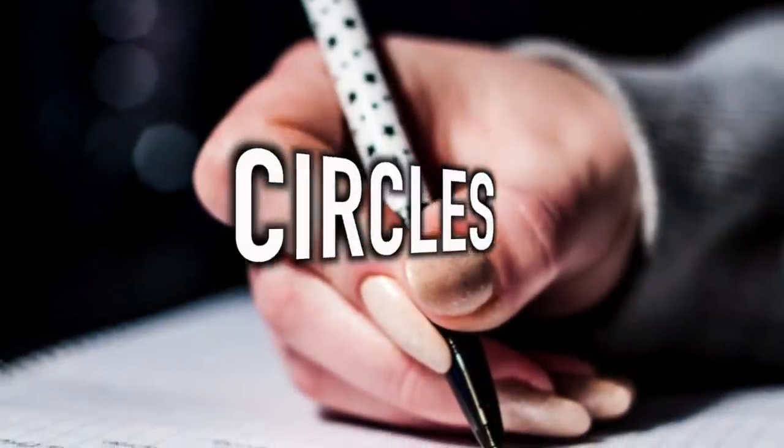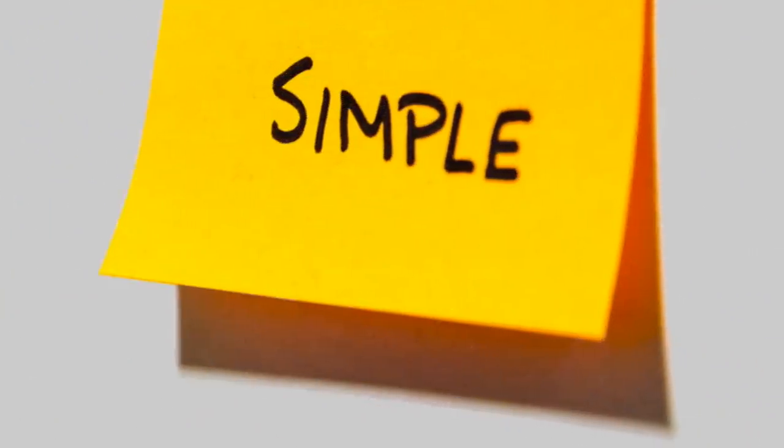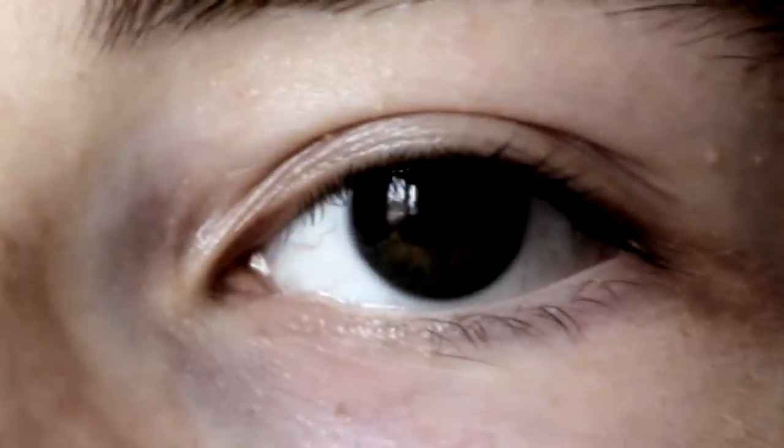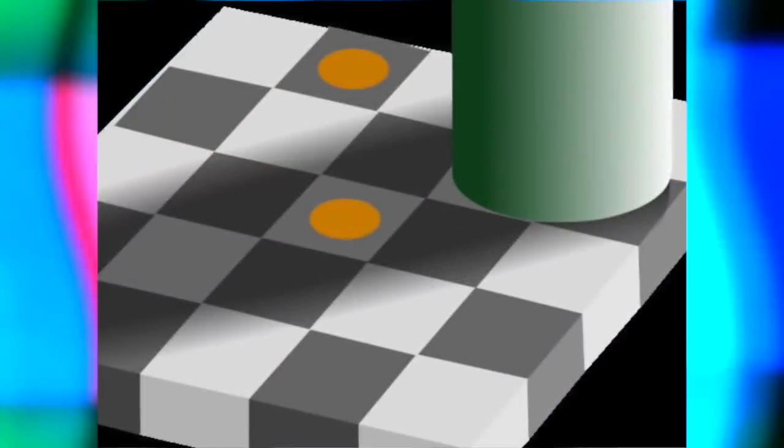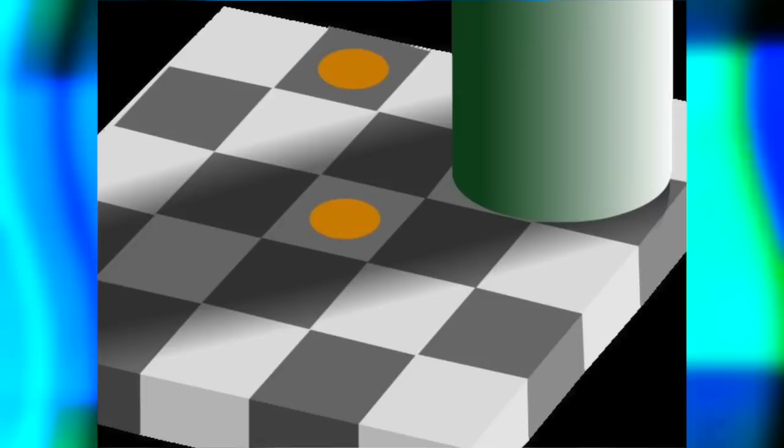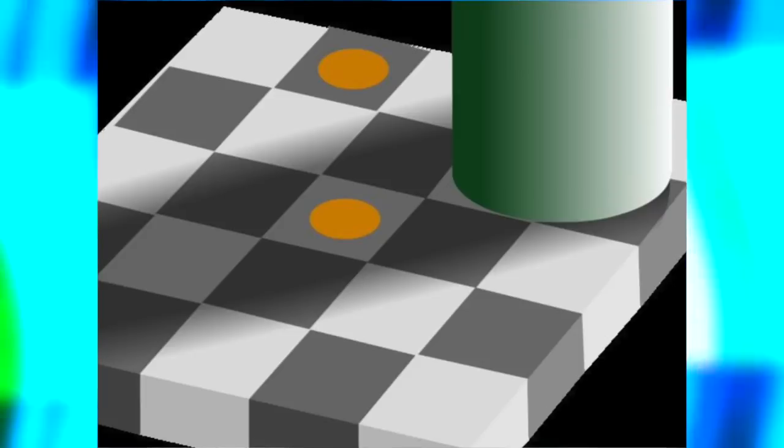Next up is circles. This is a very old test to see if you're a genius or not, and it's likely the simplest one on this list. It's all about how perceptive and intelligent you are. All you need to do is check out this image. As you can see, there's a gray-white grid on a black background, and on that grid is a green cylinder. But what is the color of the two circles in the grid? I'm gonna give you 10 seconds on the clock to answer.